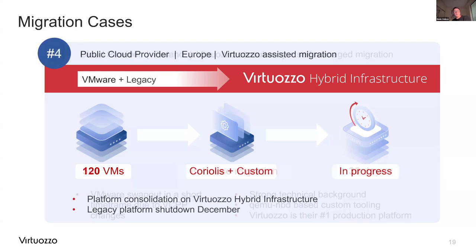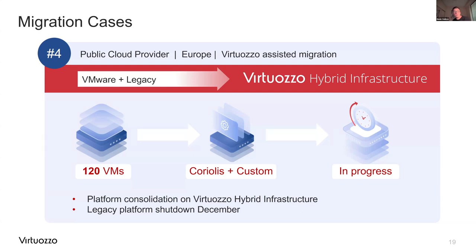The fourth case is a public cloud provider from Europe — again, platform consolidation of VMware and legacy workloads, around 120 VMs. There is no time pressure for them, so this may span across multiple months. The legacy platform is planned to be switched off in December and the VMware part will follow next. Coriolis was tested and will be the tool of choice for the VMware part, while custom tooling we created handles the legacy platform migration.